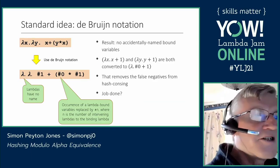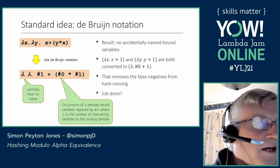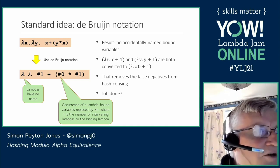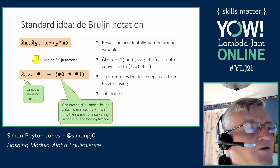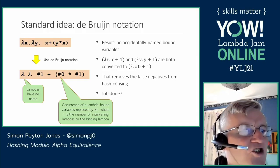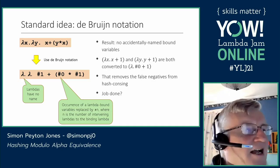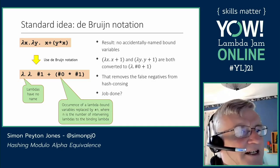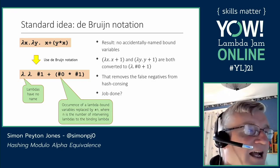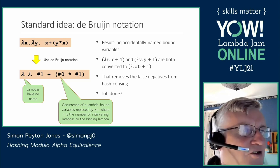The first obvious thing to do is use De Bruijn notation. We remove the names from all the lambdas — so at the top I have lambda x lambda y, x plus y times x, and at the bottom I write it in De Bruijn notation. Lambdas don't have any names: just lambda dot and lambda dot. Instead we replace every variable with a number — the number of intervening lambdas between that position and the lambda that binds it.